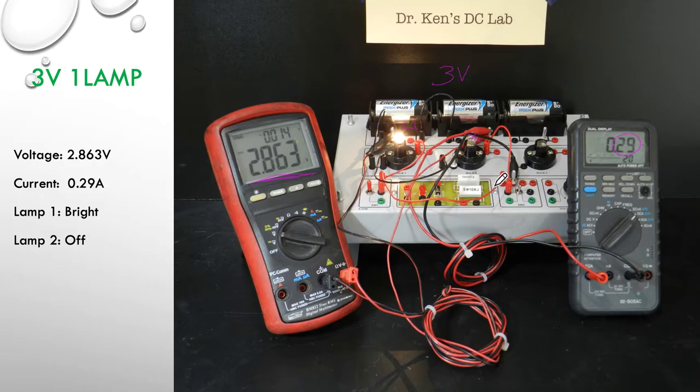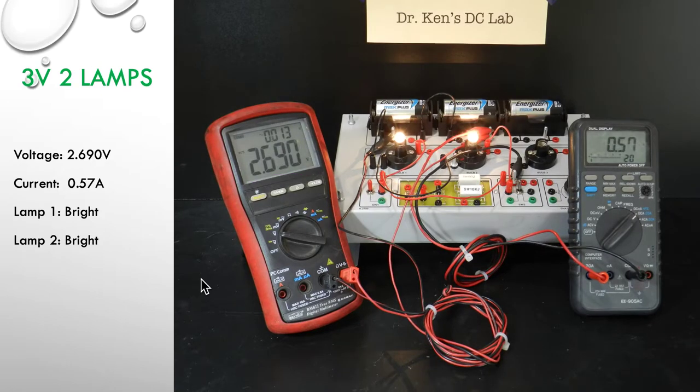So as we now move across and switch in the second lamp, what do you think might happen to this current here? So if we're going to put the second lamp in and we're going to effectively halve the resistance, we should see the current double. So let's go to the next slide and as we anticipated the current has doubled, we've got both lamps are now bright and the voltage has dropped a little down to 2.69 and again that's because of the internal resistance of the batteries.